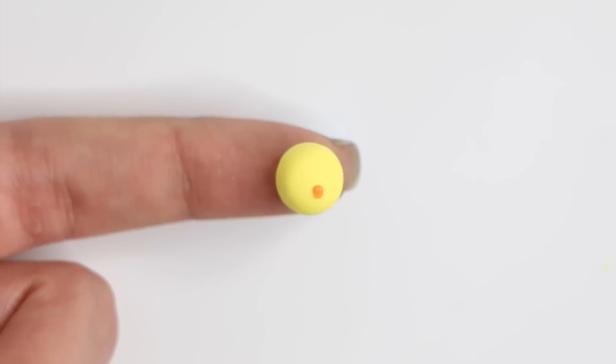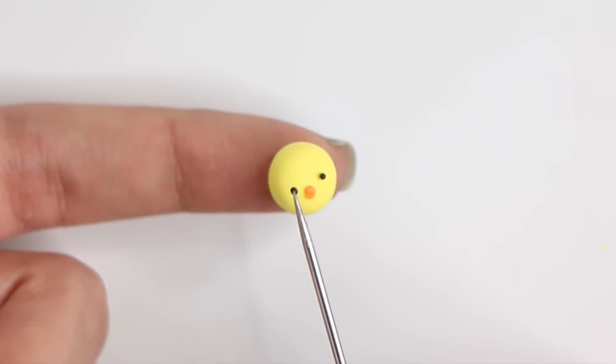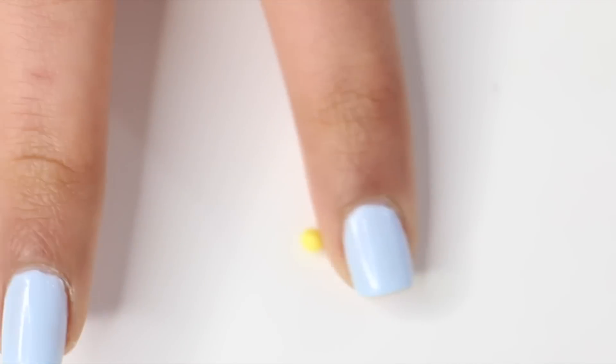And once that's done I'm going to make two balls of black polymer clay and I'm going to pop that right on. You want to flatten down the eyes so that they get bigger and so that they stay put. Honestly this video is so easy and simple to follow that I feel like I don't even need to do a voiceover.